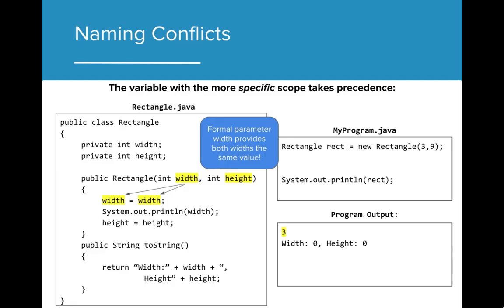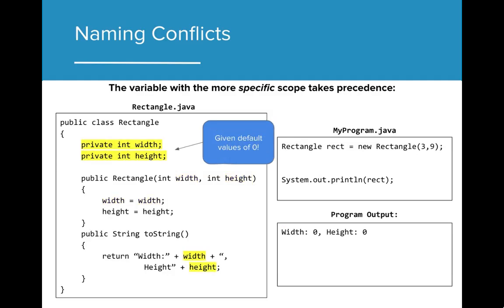Because formal parameter width has more specific scope, that's the variable that is being assigned. The instance variables width and height are actually given the default values 0 and 0 because they are not initialized in the constructor. When the toString is called, it will use the instance variable values given.